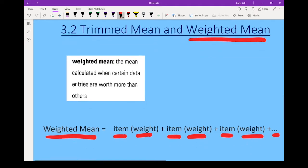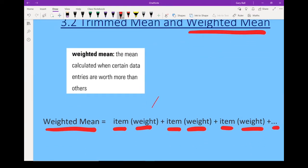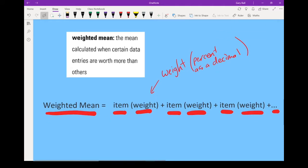So a couple of little details on that formula. Weight is always percent as a decimal. And all the weights should add up to 100% or 1. All the weights should add up to 100%.